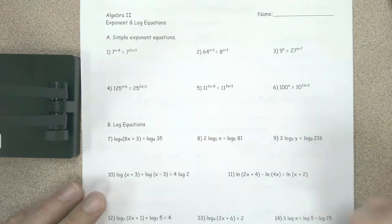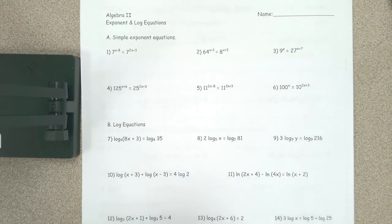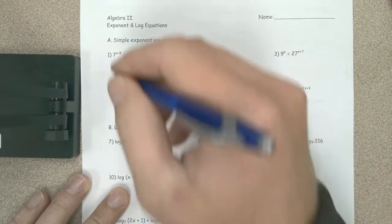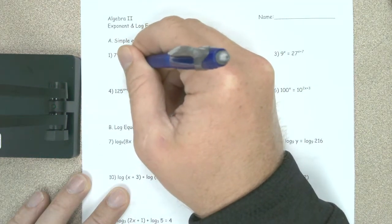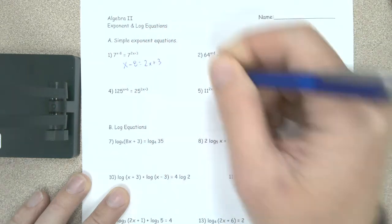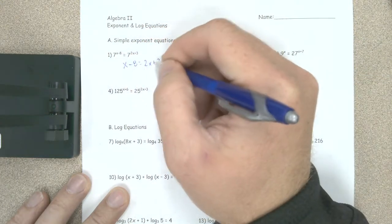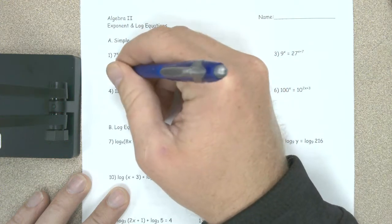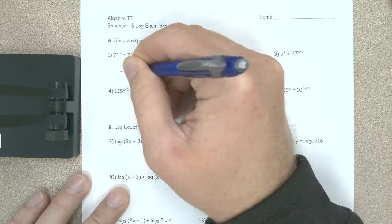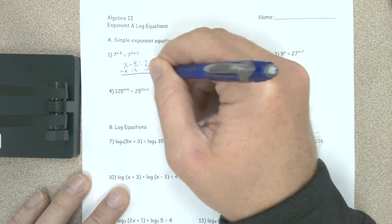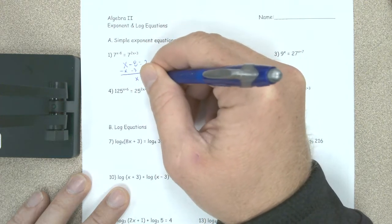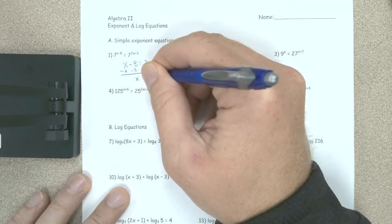I'm going to take you through the answers to the odd problems here. On this first one, they both have the same base of 7, so I'm just going to say x minus 8 equals 2x plus 3. Then I can subtract an x over and subtract 3 from both sides, so we end up getting x is equal to negative 11.